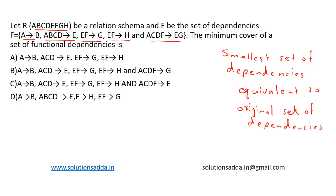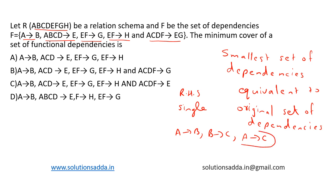The usual steps involved in finding the minimal cover are: first, we split the right-hand side attributes of all functional dependencies to ensure that the RHS has only a single attribute — if it has more than one attribute, we split it. Then, we remove all redundant dependencies. For example, if A determines B, B determines C, and A determines C, then A→C is redundant because A determines B and from B we can determine C.